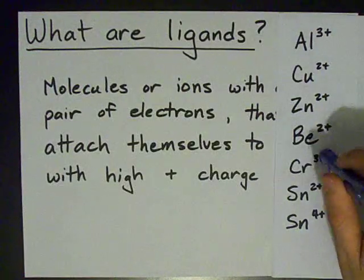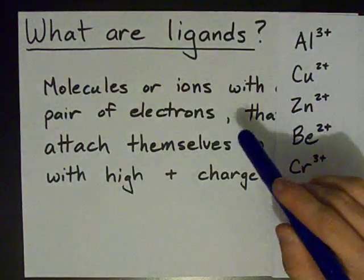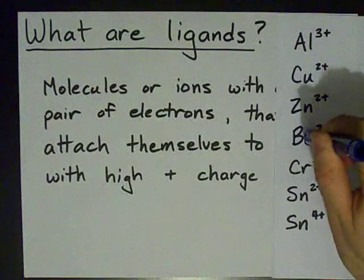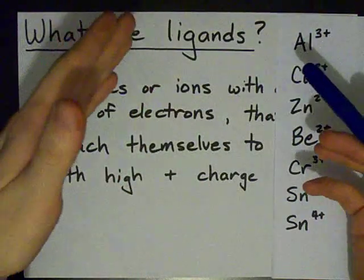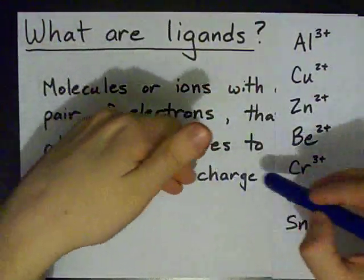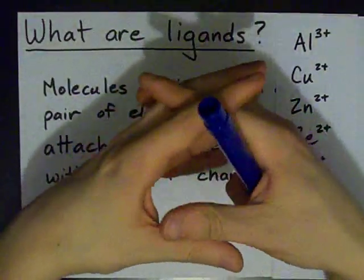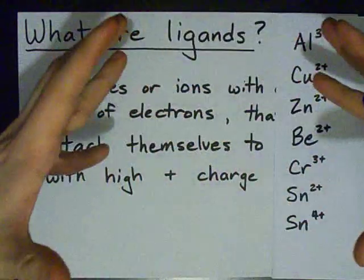Notice all of these have charges of two or more positive. And they're all just single metal ions. Because if you get any bigger than a metal ion, generally the charge density is going to be too low. After all, density is lower the bigger the volume is.